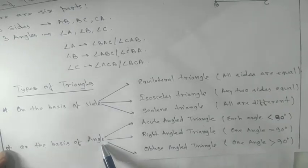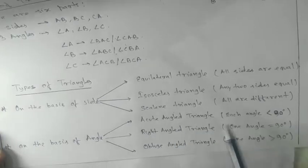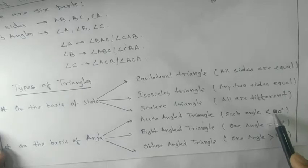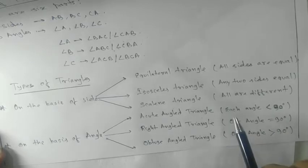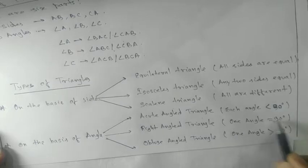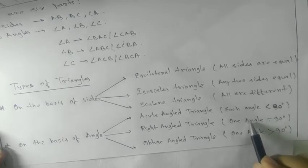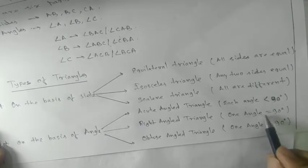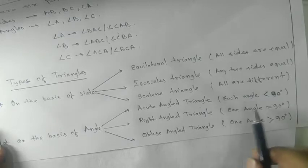On the basis of angles, triangles are of three types. Acute angle triangle means each angle should be less than 90 degrees. Right angle triangle means any one angle — remember, only one angle — should be 90 degrees. Two angles cannot be 90 degrees because the sum of angles of a triangle is 180 degrees. If two angles were 90 and 90, that gives 180, leaving nothing for the third angle.